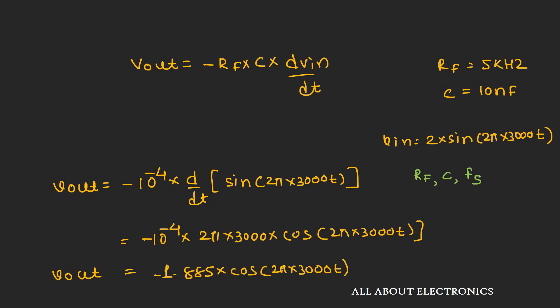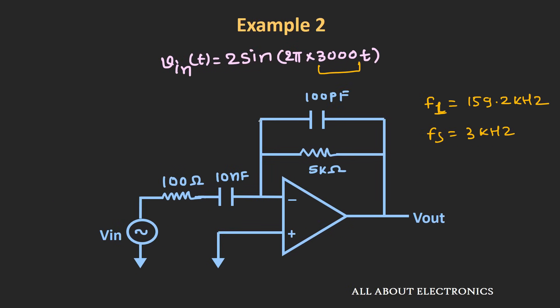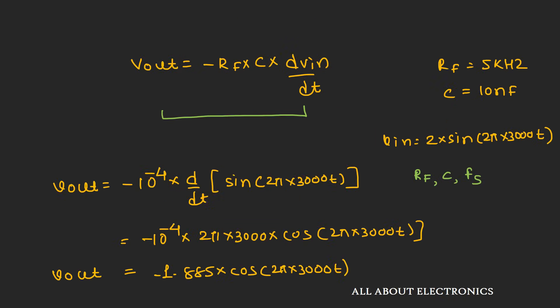If you operate the same circuit at 6 kHz, the output amplitude will double. Note that this expression for the practical differentiator is valid only when the input signal frequency is well below the upper cutoff frequency.